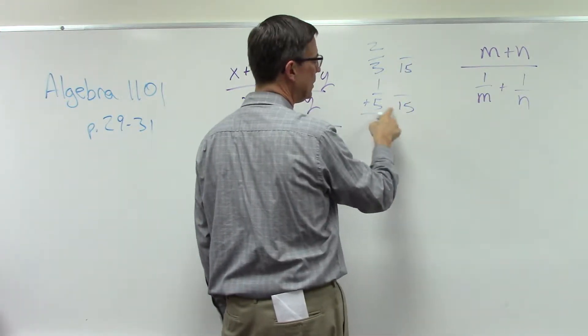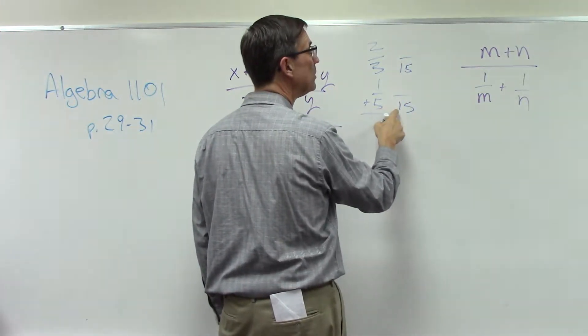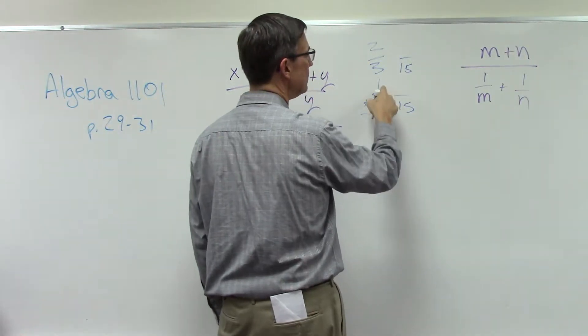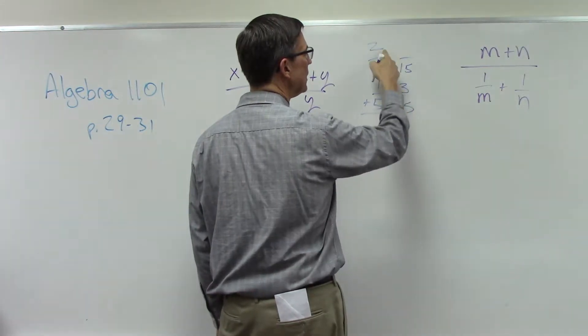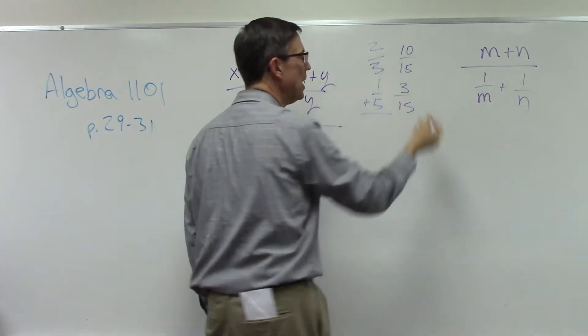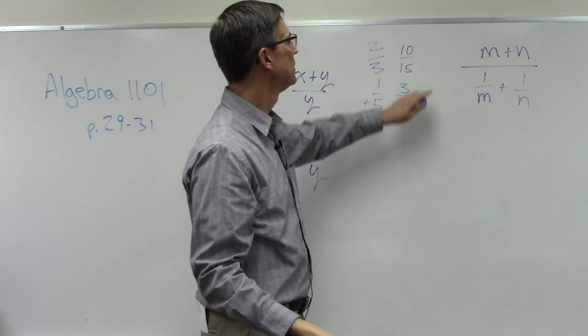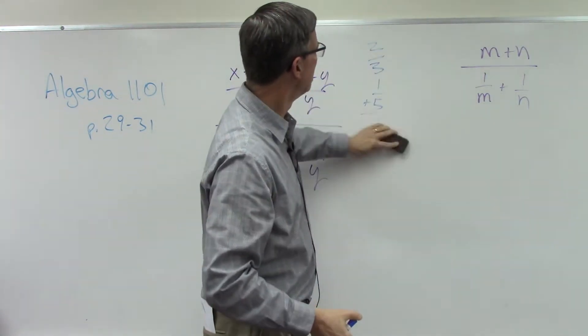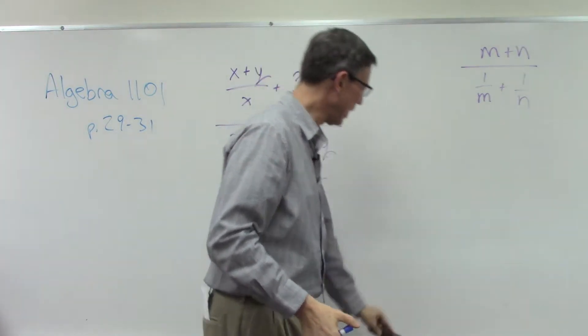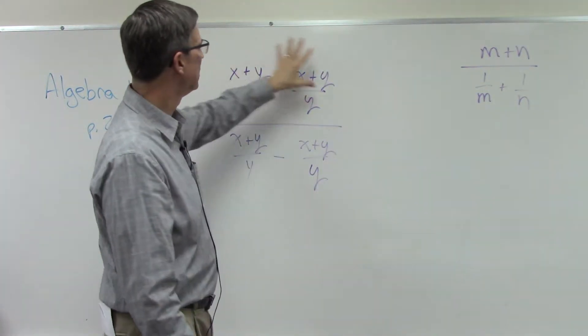To get the 15, you'd multiply 5 times 3, which means we take this numerator times the same 3. This one's 3 times 5, so I take 2 times 5 and get 10. Once we have the same denominator, then we can add. So we have to do something very similar to elementary fractions when we're adding here.